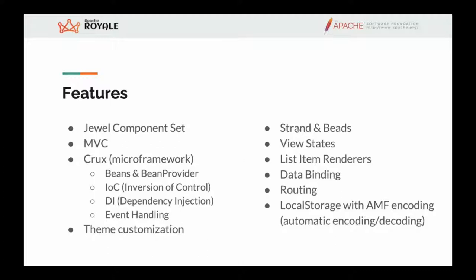This application uses a core concept in Royale: strands and beads. Also view states, list item renderers, how to bind or draw data in a list, data binding, routing, and finally local storage. Routing is a new term in Royale — it's not the same term that was in Flex. In Flex it was called deep linking, but in new web applications we know it as routing.